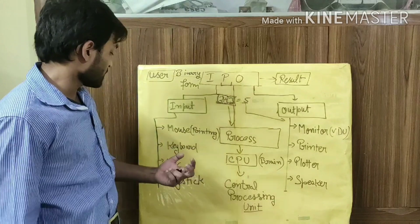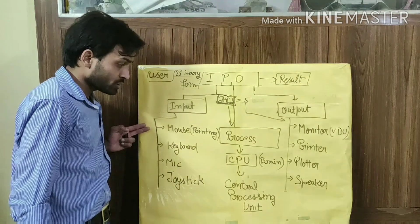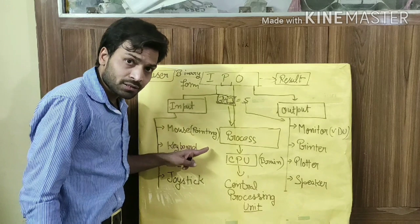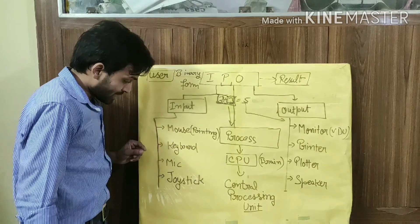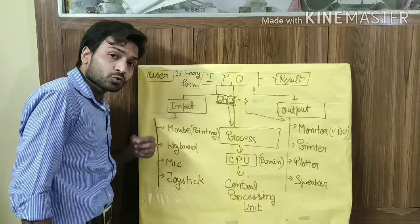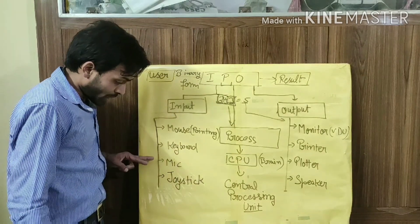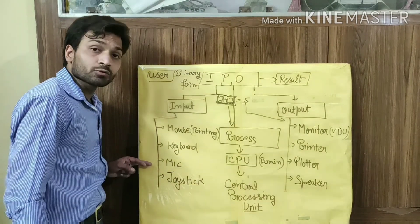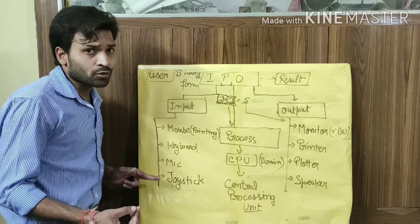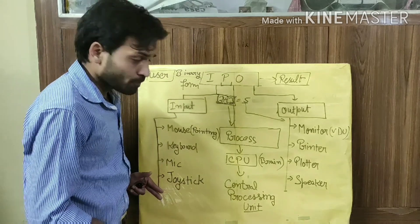Similarly, for input devices, the most common input device is the mouse, also known as a pointing device. The keyboard is used for typing, the mic is used for recording voice, and the joystick is commonly used for playing games.